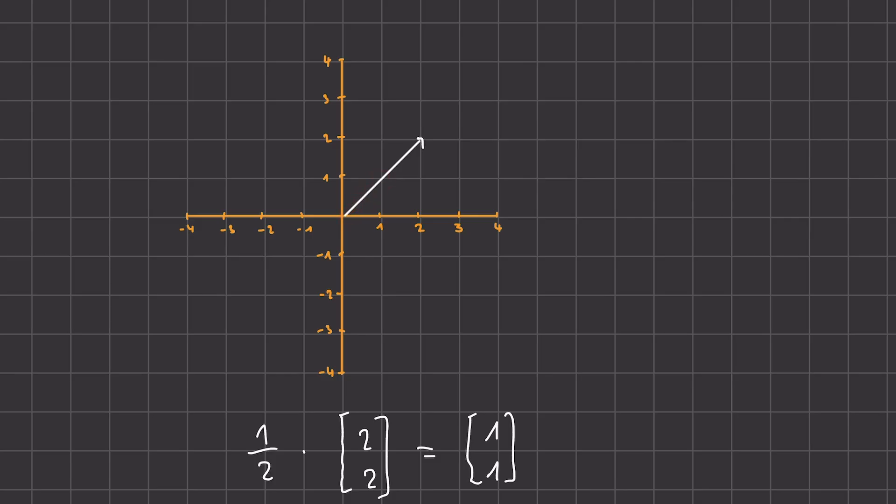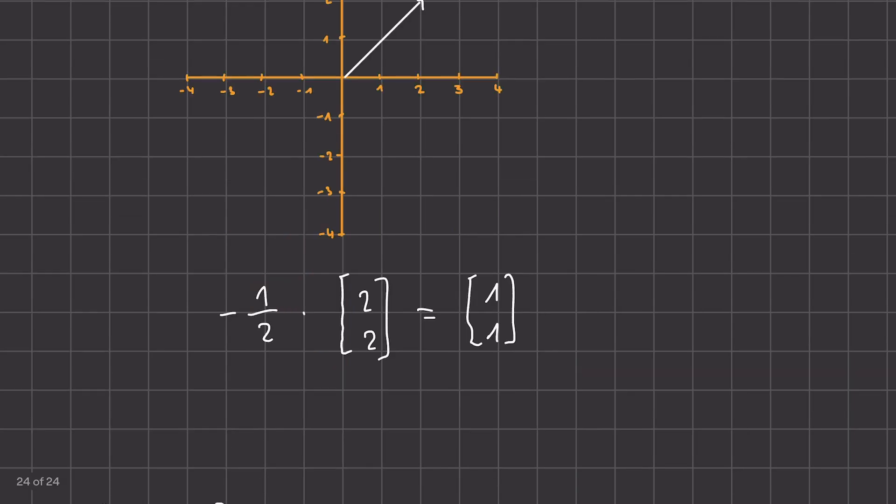And with negative numbers, we would just first flip our vector and then scale it again. So if this number was, for example, negative 1 half, what we would do is first flip it. So we would draw the vector in the opposite direction, and then apply the scaling. So again, half would mean we would reach this point here. And in the multiplication, we would then also get negative 1 for both entries.